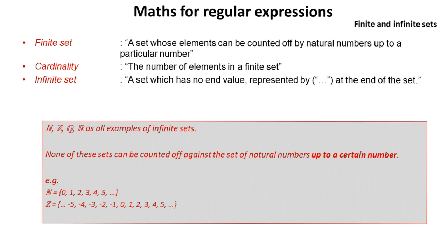We then have infinite sets, which we've already touched on. These are represented by the three dots at the end or the beginning. It's a set which has no end value. So N, Z, Q and R are all examples of infinite sets because they never end.